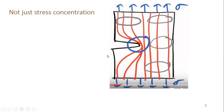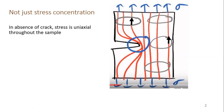First, let's consider what would happen if there were no discontinuity. Without the discontinuity, the stress that the sample experiences is in the vertical direction — the magnitude is also vertical. In the absence of the notch, stress is uniaxial throughout the sample. You can see this clearly here: the direction is vertical and the magnitude is purely vertical.